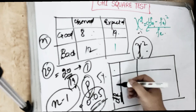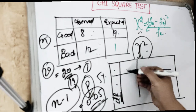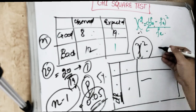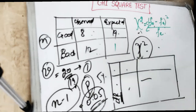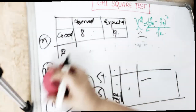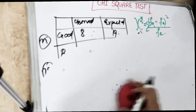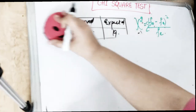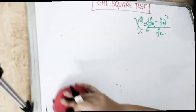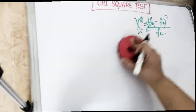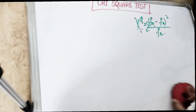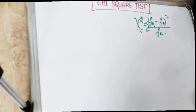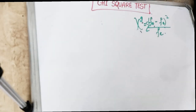According to the degree of freedom, we check the values and conclude from the chi-square test whether the variables are associated. If the value is less than p, we say the variables are not associated.